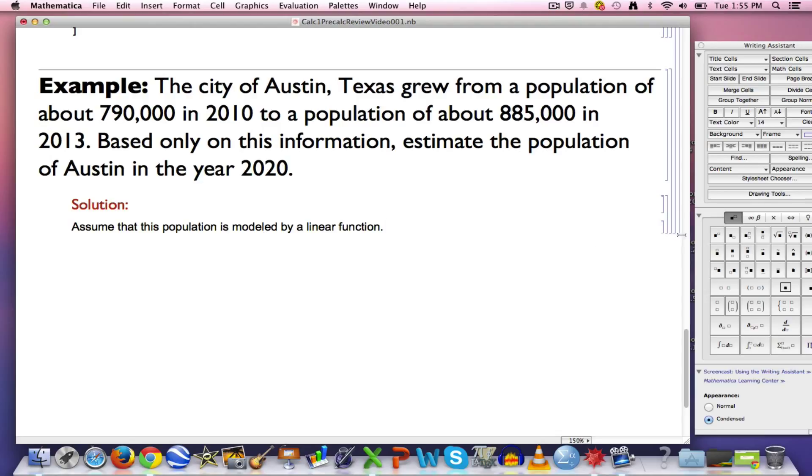Hopefully you recall that such functions take the form, often they're written y equals mx plus b, but if you've got an initial population at time zero, I'm going to imagine 2010 is time zero, that's the 790,000 here, and you've got a rate of change, a slope, which is going to be the change in the population. The growth here looks like it's 95,000, divided by the change in the time. 2010 to 2013 is three years.